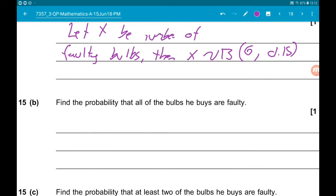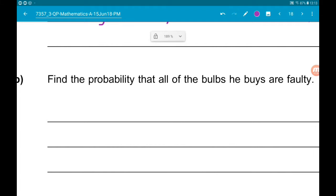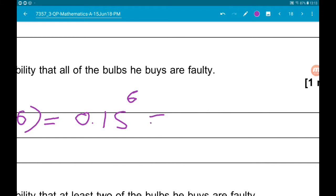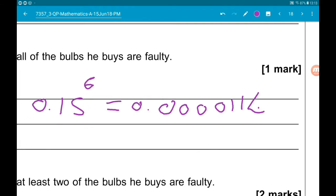Part B wants us to find the probability that all six light bulbs he buys are faulty. Let's do it a bit nicer. Probability X equals 6. It's just 0.15 to the power 6, which is going to give us 0.0000114 if we go to 3 significant figures.